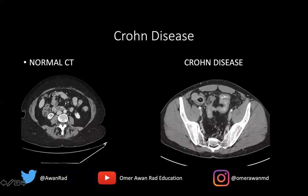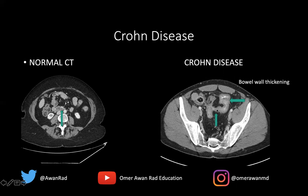On a normal CT axial image, the small bowel shows fluid in the lumen with a very thin, imperceptible wall. In contrast, a patient with Crohn's disease near the terminal ileum shows marked bowel wall thickening with mucosal enhancement. A stricture appears as a very narrowed segment of the terminal ileum. These are examples of what Crohn's disease looks like on CT imaging.